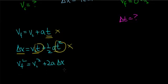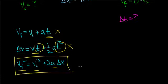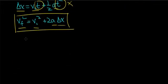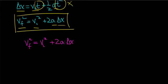Take a look at the third equation: it relates final velocity to initial velocity, the acceleration, and the distance over which the object travels. This is going to be the most useful form of the equation to solve this problem. So we rewrite: v_f² = v_i² + 2aΔx.